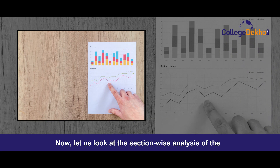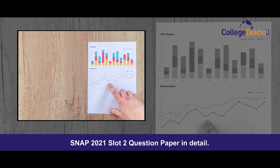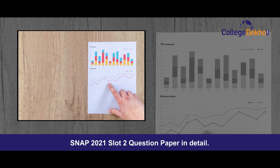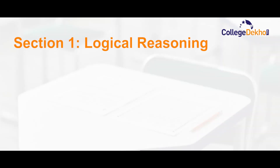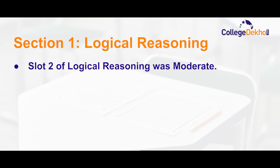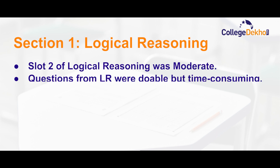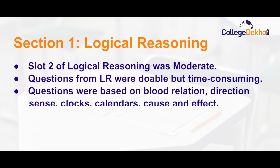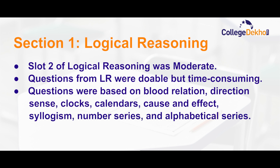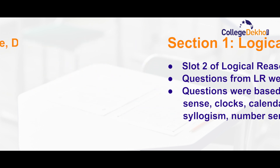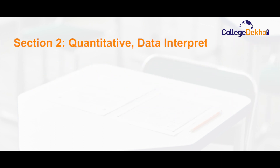In Section 1, Logical Reasoning, the overall section was moderate. Questions from LR were doable but time-consuming. Questions were based on blood relations, direction sense, clocks, calendars, cause and effect, syllogism, number series, and alphabetical series.